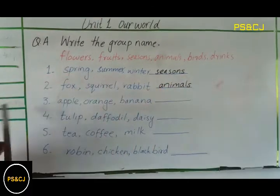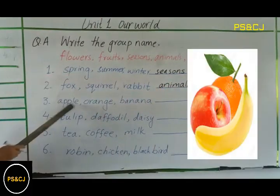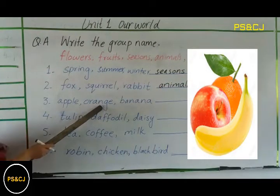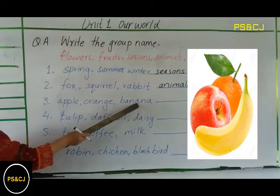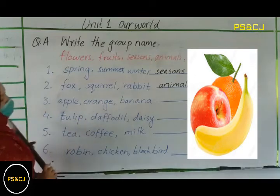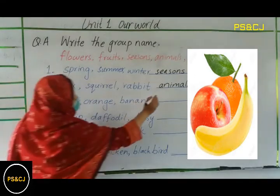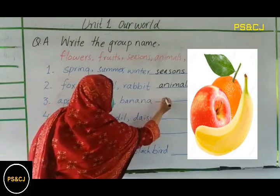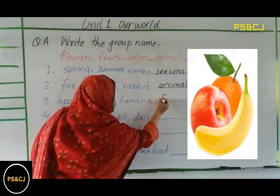The third one: apple, orange, banana — the group name is fruits.